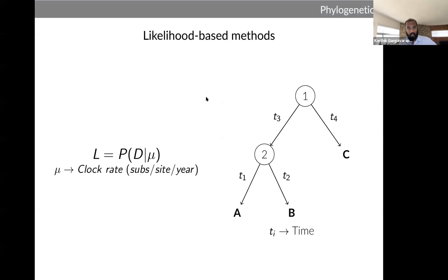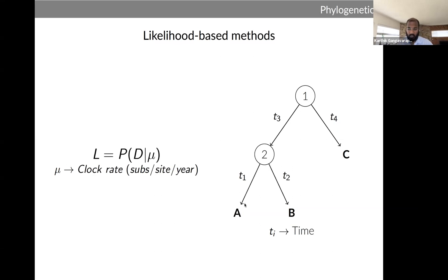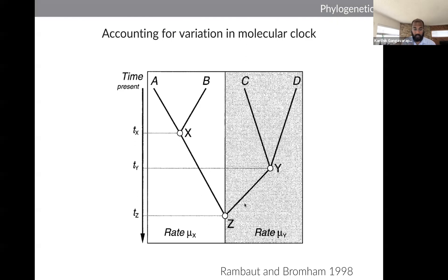The first attempts at divergence dating were based on likelihood — maximizing the likelihood of seeing your data given a certain clock rate. If you have three genomes A, B, and C, you can maximize the likelihood to reconstruct the evolutionary tree, where every branch represents real time. The molecular clock was initially regarded as constant over time, but it was later found that the molecular clock actually varied significantly based on population bottlenecks or other epidemiological factors.